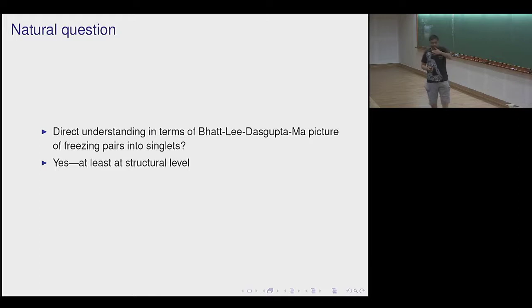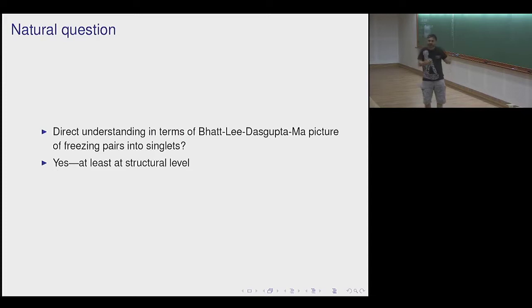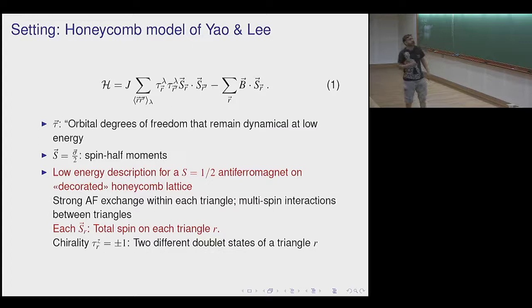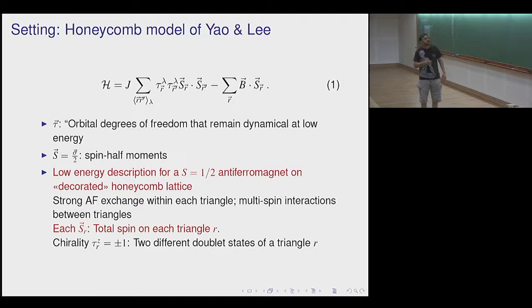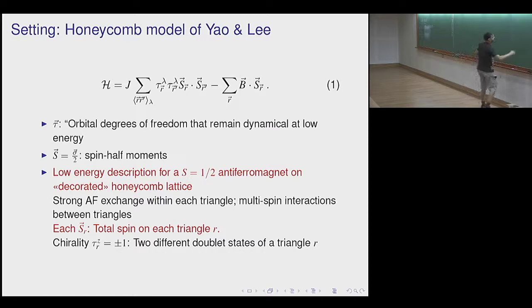A natural question is whether there is an underlying picture where one can do a renormalization group calculation and get the same answer. I think yes at some structural level but we haven't carried it through. Here's the model: it was introduced by Hong Yao and Dinghai Li, a nice variant of the Kitaev model. Their starting point is a decorated honeycomb lattice where every honeycomb lattice point becomes a triangle — A sublattice points become upward-pointing triangles, B become downward-pointing ones.